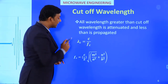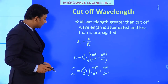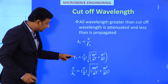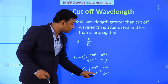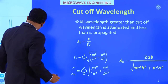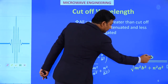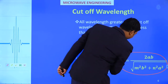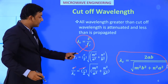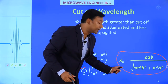We know λc = c/fc. Substituting fc = (c/2)√((m/a)² + (n/b)²), we get λc = c divided by that expression. Simplifying, c cancels, giving λc = 2ab/√(m²b² + n²a²). That is the cutoff wavelength equation.